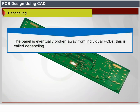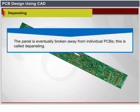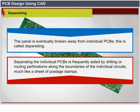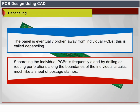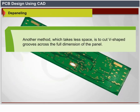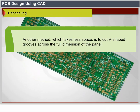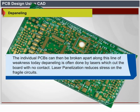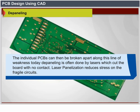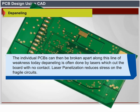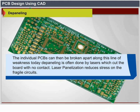Depaneling: a panel is eventually broken apart into individual PCBs. Separating the individual PCBs is frequently aided by drilling or routing perforations along the boundaries of the individual circuits, much like a sheet of postage stamps. Another method is to cut V-shaped grooves across the full dimension of the panel; the individual PCBs can then be broken apart along this line of weakness. Today, depaneling is often done by lasers, which cut the board with no contact, reducing stress on fragile circuits.